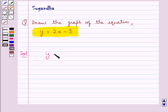The given equation is y is equal to 2x minus 3. Now we will make a table for the values for x and y.